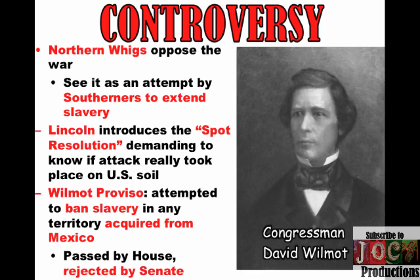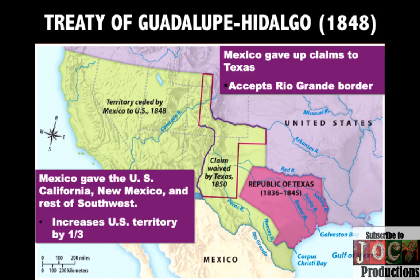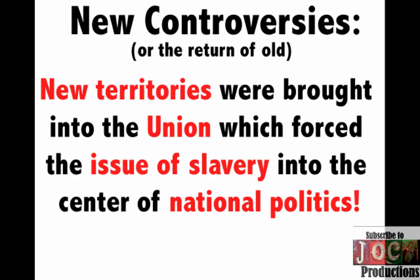The war is horrible for Mexico — they lose most of the major battles, and it ends with the Treaty of Guadalupe Hidalgo in 1848. The United States territory increases by one third: the United States is given California, New Mexico, and the rest of the Southwest, which includes places like Arizona, Utah, and Nevada. The United States also gets Mexico to agree to give up its claims to Texas and to accept the Rio Grande as the border between the two nations. For Mexico, this is devastating — about half of Mexican territory is taken. This is going to create a huge strain on the relationship between these two countries, and more importantly, as these new territories are added to the Union, it's going to force the issue of slavery back into the center of national politics.